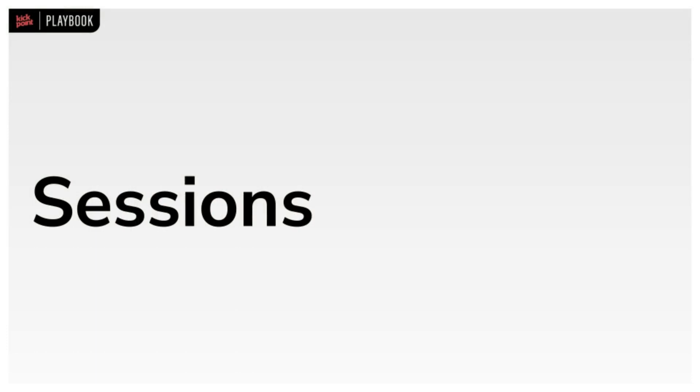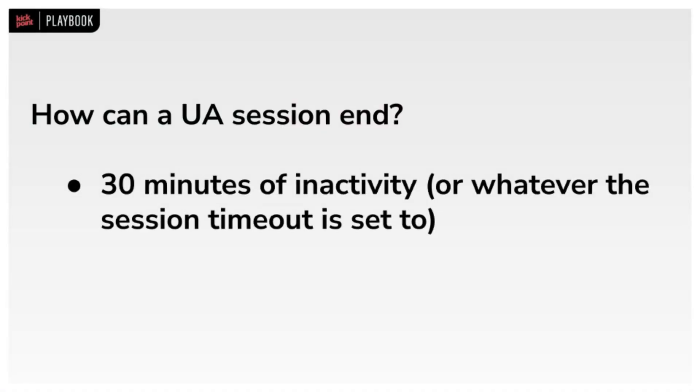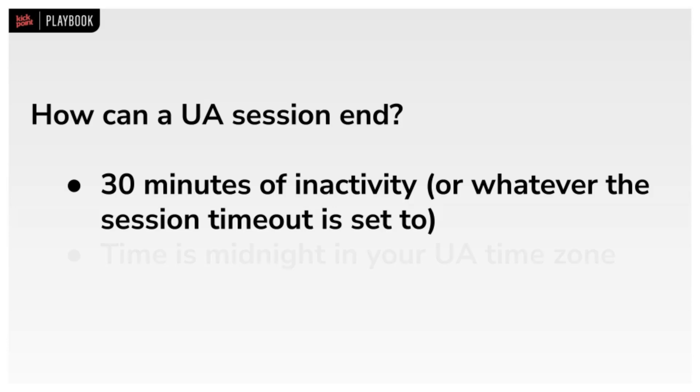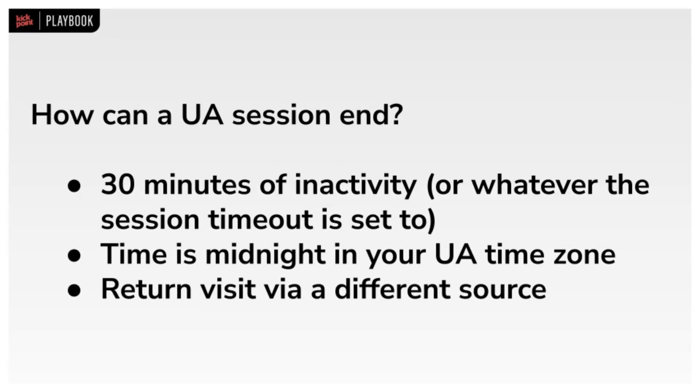I prefer the GA4 metric because it focuses on actual people using your website as opposed to tab hoarders. We've seen differences of anywhere from 5 to 30% between UA and GA4 when it comes to user counts. Related to users, let's talk about sessions. UA considers a session to be a collection of stuff that you did while visiting your website. There are a few ways a session would end: 30 minutes of inactivity, or whatever you had your session timeout set as — most people never changed the default, so it was probably 30 minutes. Or a person could hit midnight in your UA timezone setting, which would end their current session and start a new one.